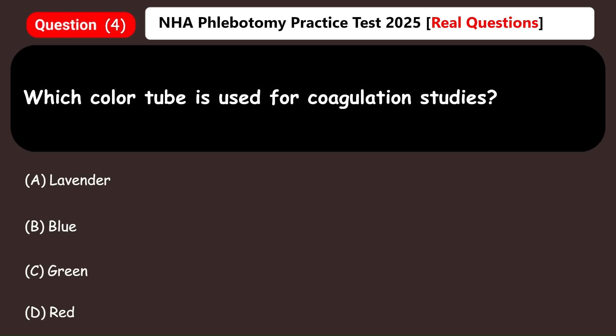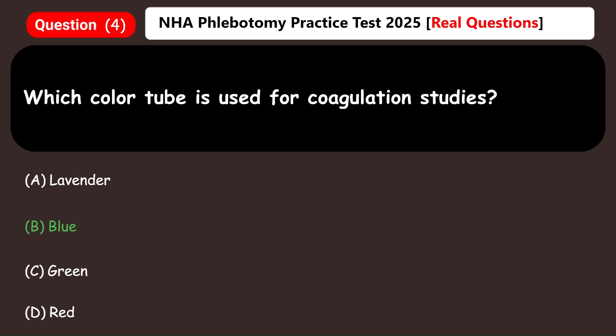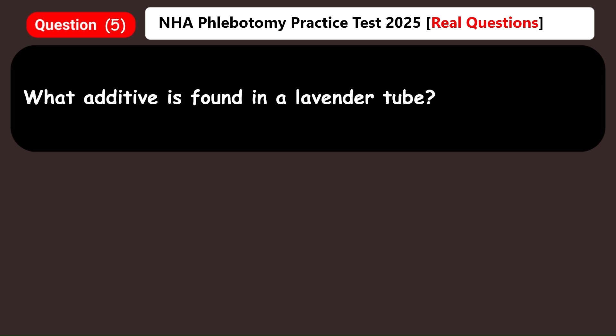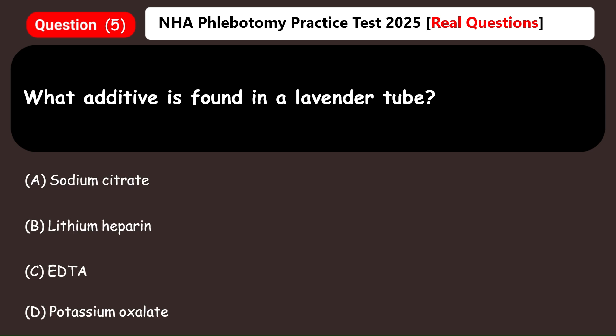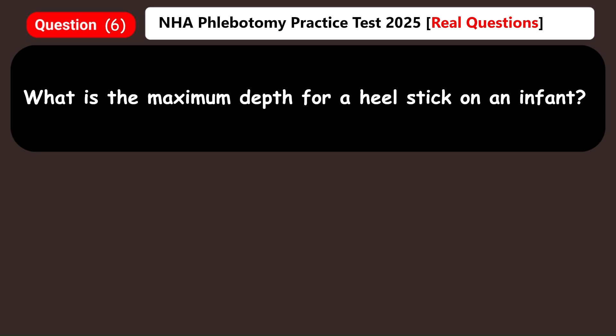Which color tube is used for coagulation studies? A) Lavender, B) Blue, C) Green, D) Red. Answer: B) Blue. What additive is found in a lavender tube? A) Sodium citrate, B) Lithium heparin, C) EDTA, D) Potassium oxalate. Answer: C) EDTA.